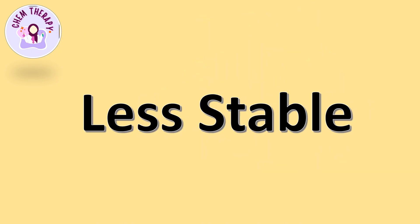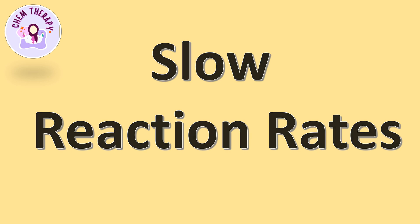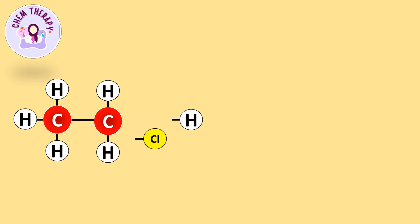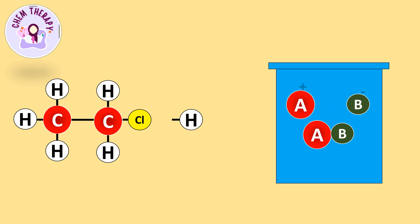Organic compounds are less stable than inorganic compounds, because they have covalent bonds, which are weaker than the ionic bonds present in inorganic compounds. However, the reaction rates of organic compounds are much slower compared to inorganic compounds. The reason is that organic compounds contain covalent bonds, so it requires time to break the old bonds first and then form new bonds. On the other hand, inorganic compounds contain ions, and the ions immediately separate when dissolved in solution, so new ions can quickly form bonds.